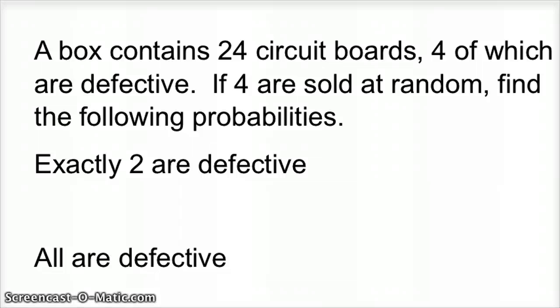So a box contains 24 circuit boards, four of which are defective. If four are sold at random, find the following probabilities. The first one is that exactly two are defective.